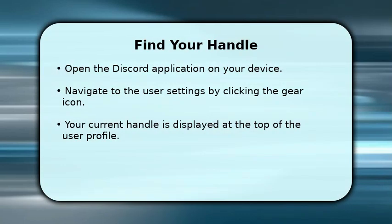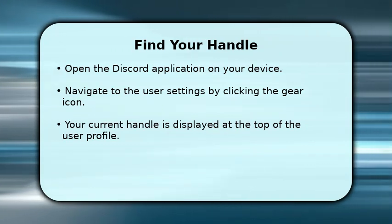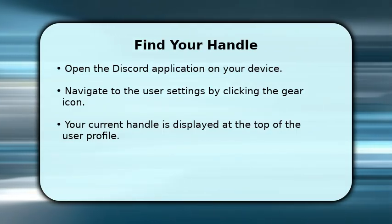To begin, open the Discord application on your computer or mobile device. Look for the small gear icon, typically located near your profile picture in the bottom left corner. Clicking this icon will take you to your user settings.